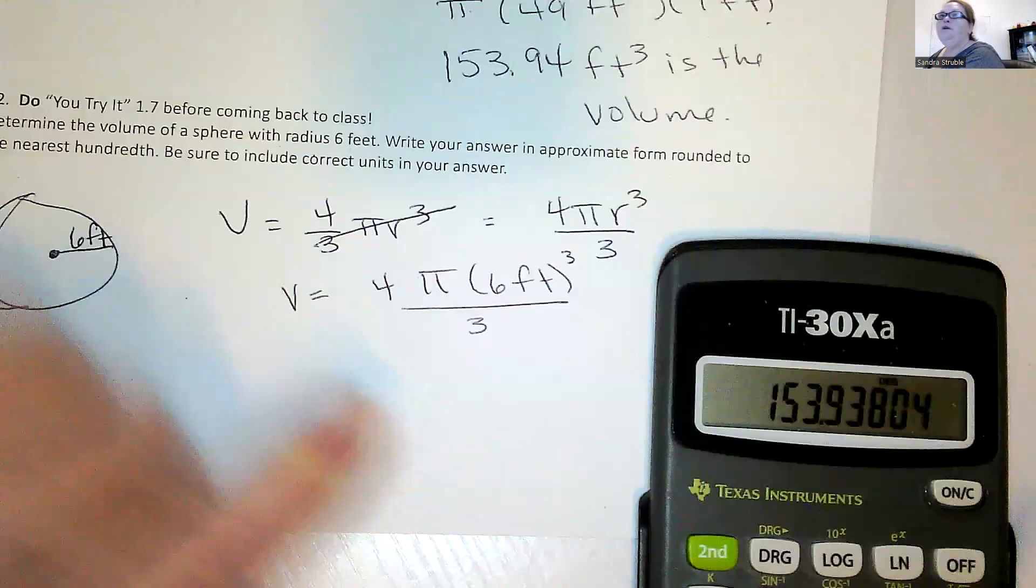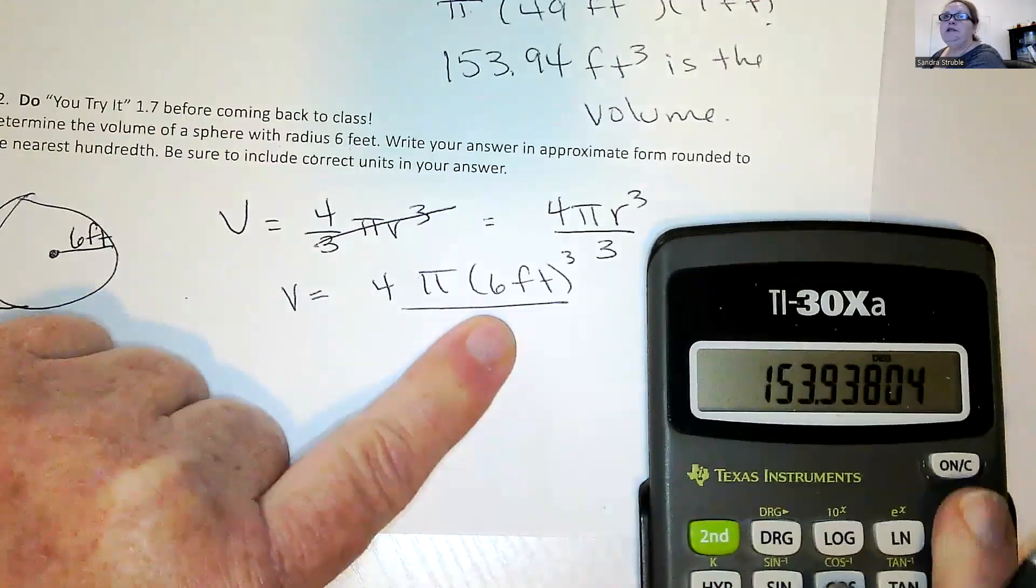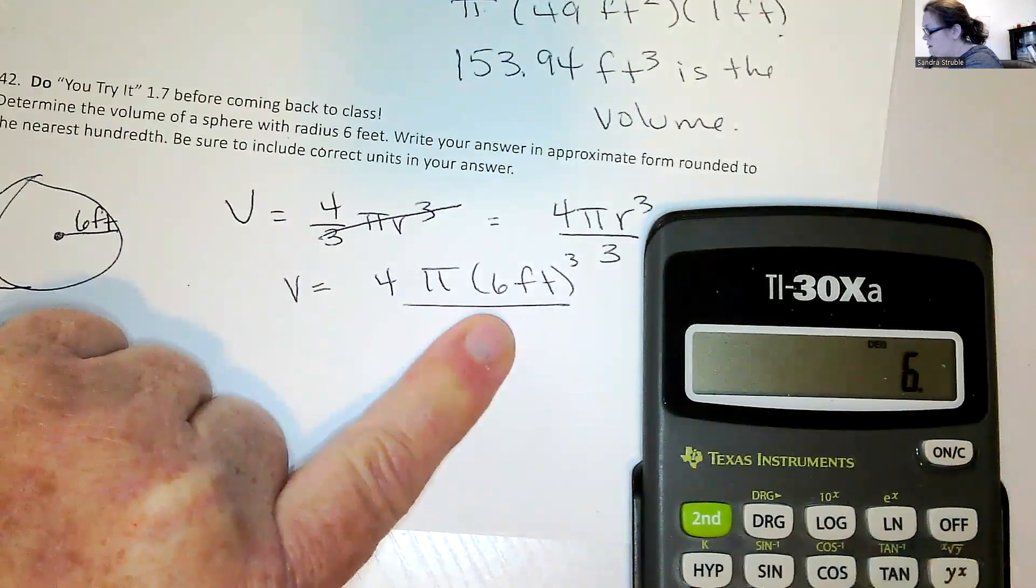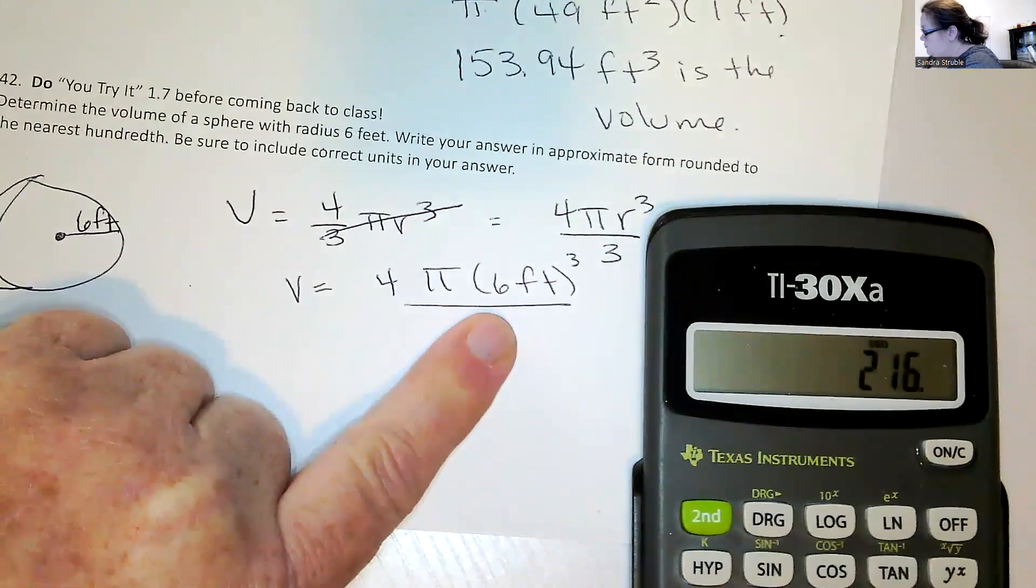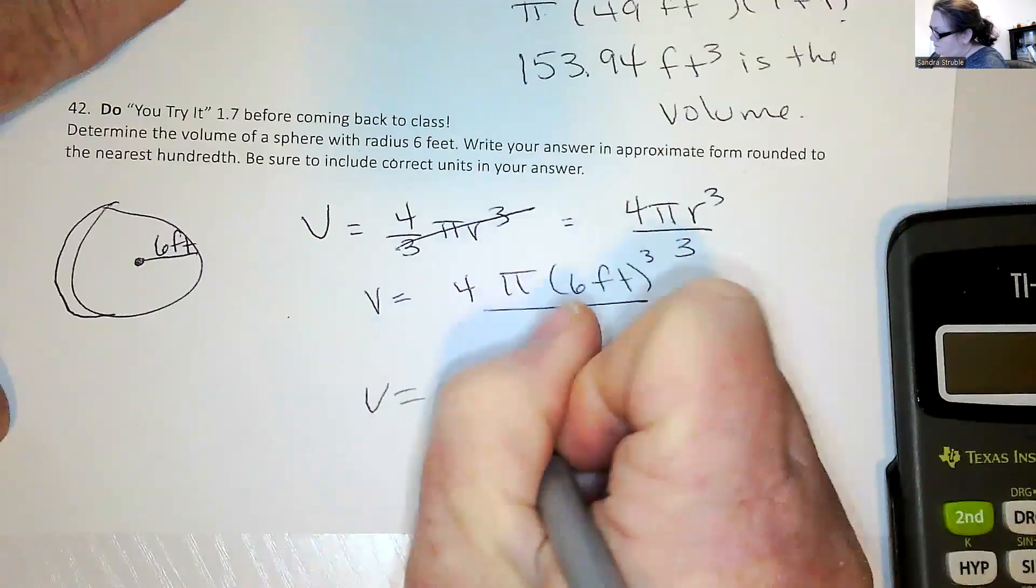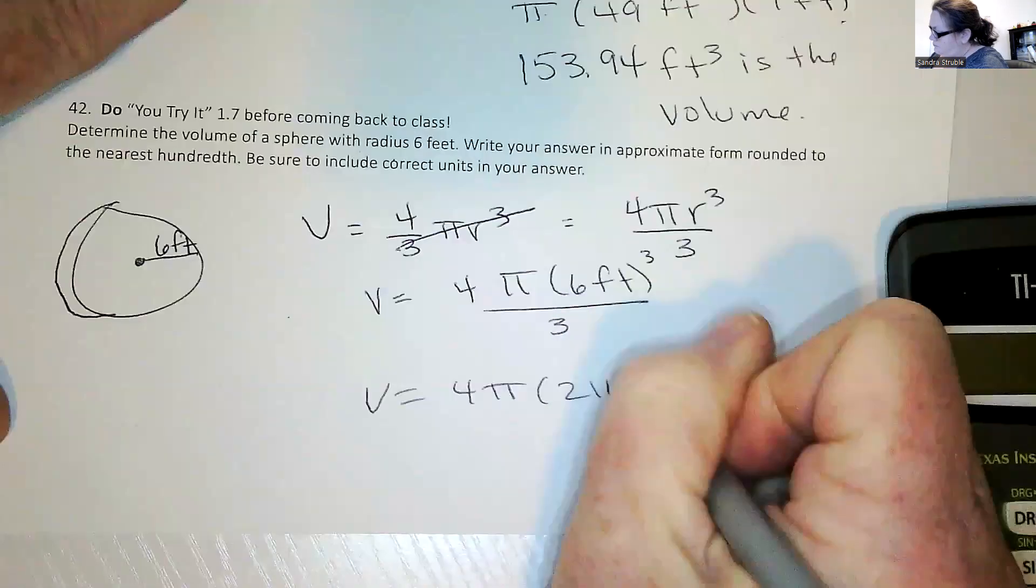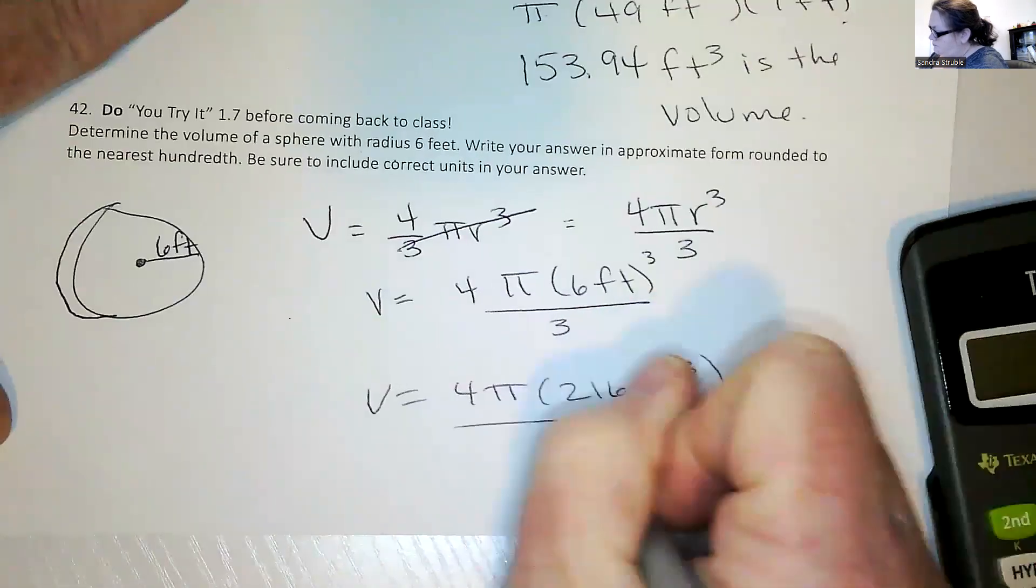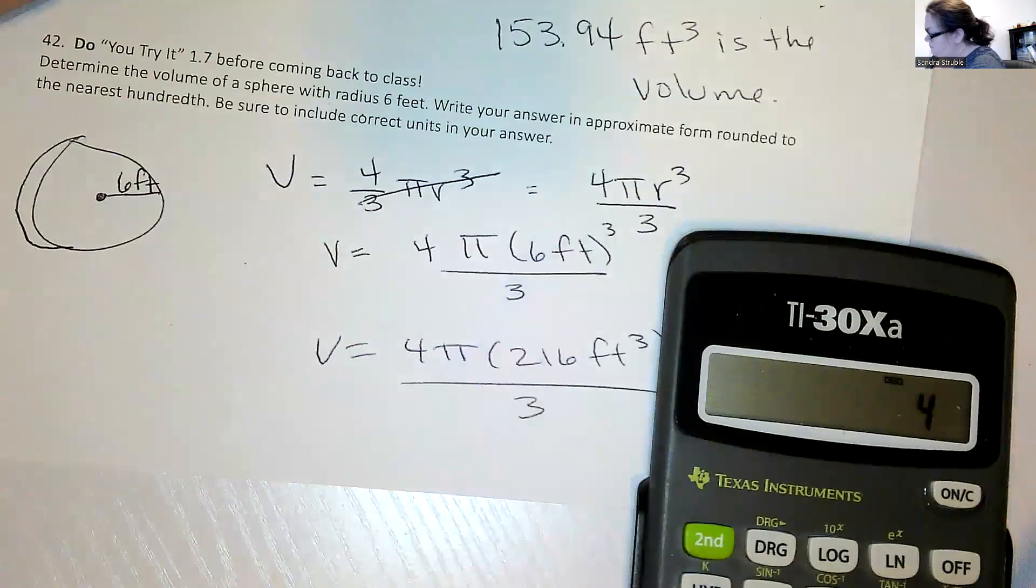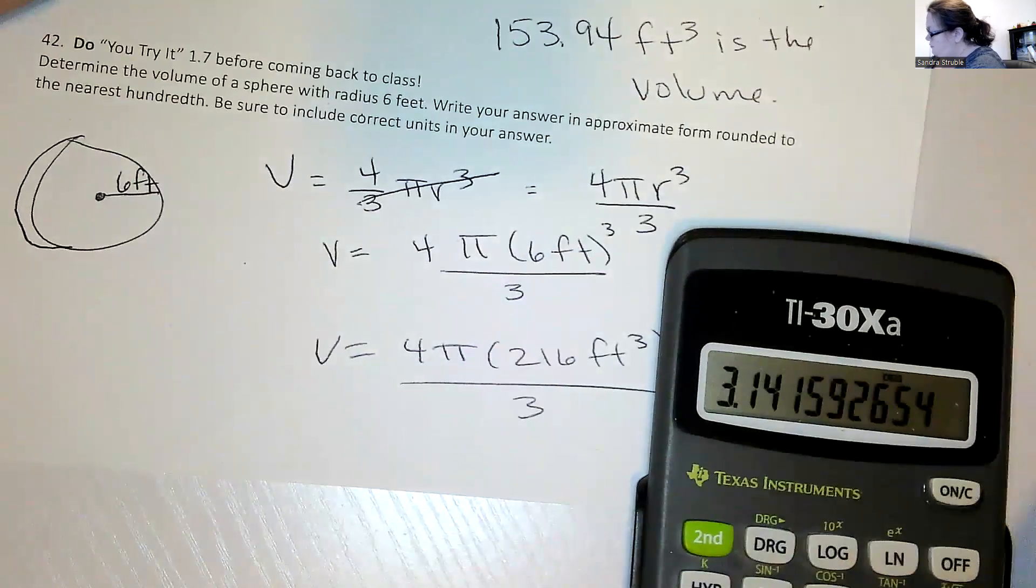So I'm going to start with order of operations. I'm going to start with my six cubed. So six carat or y to the x, three and equals is 216.